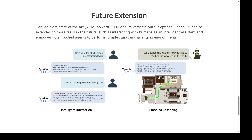Looking forward, one exciting direction is enabling more intuitive human-computer interaction in 3D environments — being able to give spatial commands in natural language, like telling a computer to highlight all the chairs in a room and having it do so in real time. Another major area of focus is embodied AI — giving robots and virtual agents the ability to perceive and act in the world, navigating complex environments, manipulating objects, and interacting with humans with a much deeper understanding of the space they're in.